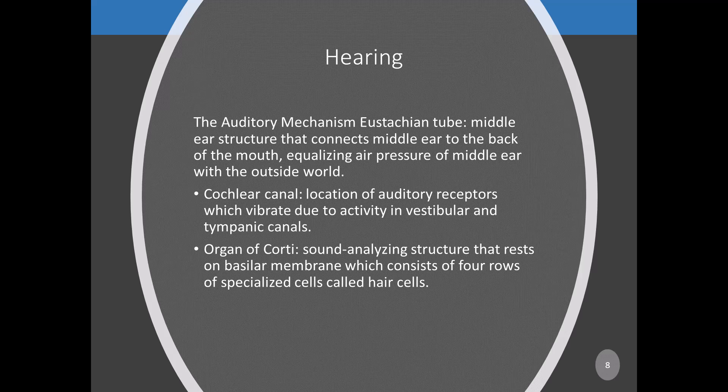Membranes also separate the air-filled middle ear and the fluid-filled inner ear, called the oval and round windows. The snail-shaped cochlea is the location of sound analysis within the ear. It consists of a tube about 35 millimeters long in humans, coiled about two and a half times, subdivided by membranes into three fluid-filled chambers or canals.